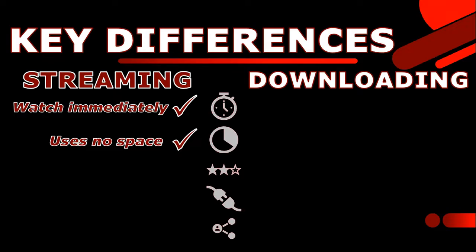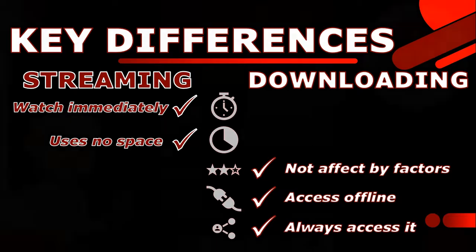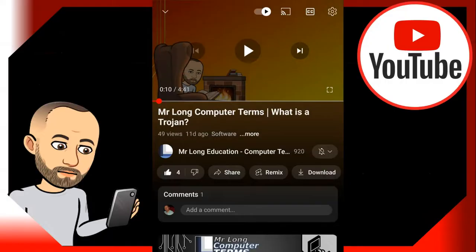Streaming quality can be affected by factors such as internet speed and bandwidth, whereas downloaded content is generally of a higher quality and is not affected by these factors. You can access your downloaded content when offline, whereas streaming requires an internet connection. When downloading content, the user owns a copy of the file and can access it whenever they want. With streaming, the user does not own the content and may lose access to it if the service is discontinued or the user's subscription is cancelled.